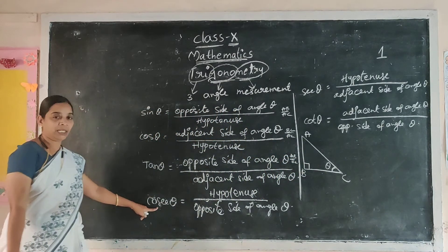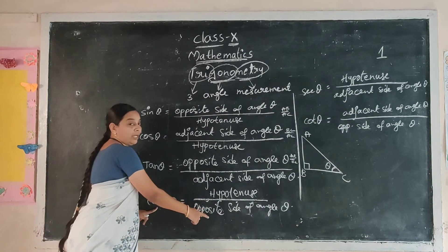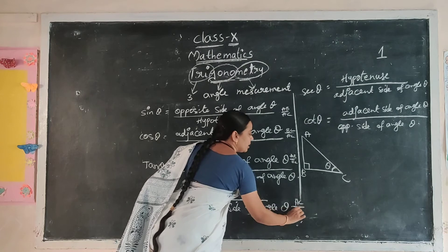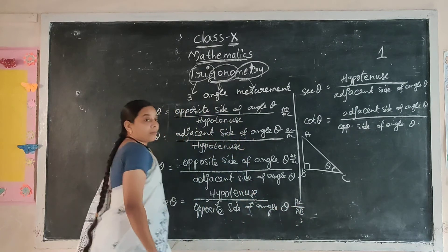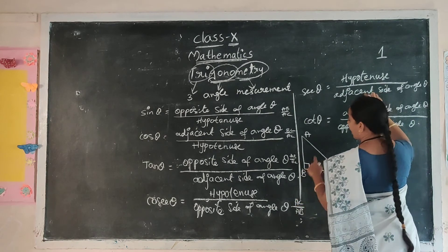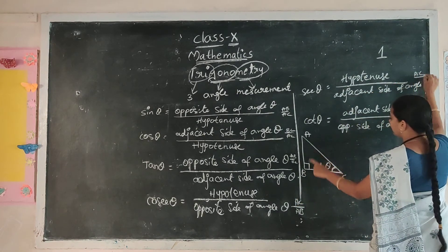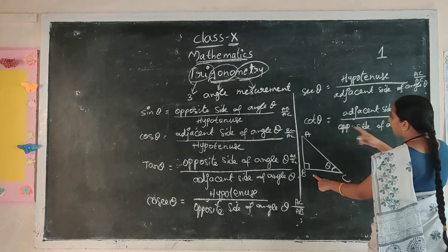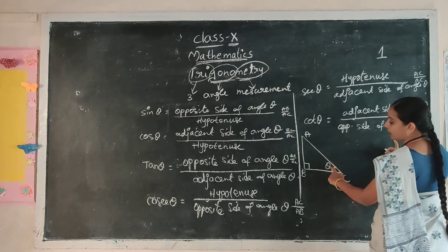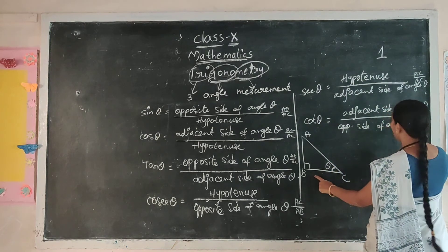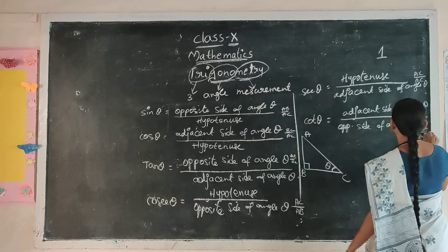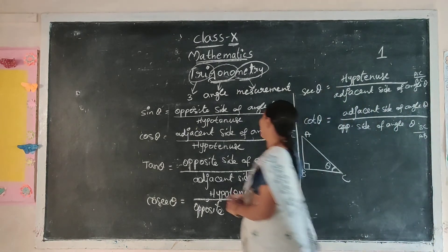Cosecant theta is hypotenuse by opposite — AC by AB. Secant theta is hypotenuse by adjacent — AC by BC. And cotangent theta is adjacent side of theta by opposite side of theta — BC by AB. These six ratios are very important. Read carefully.